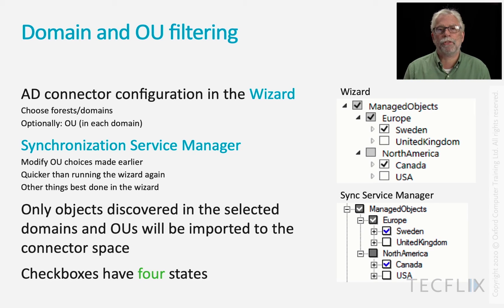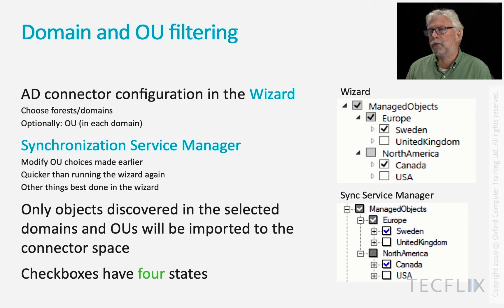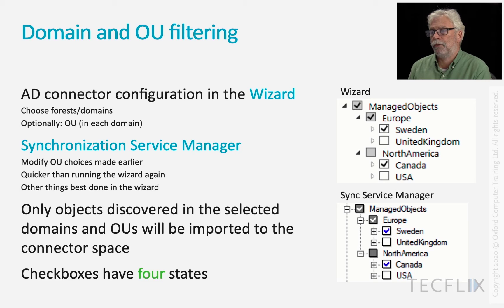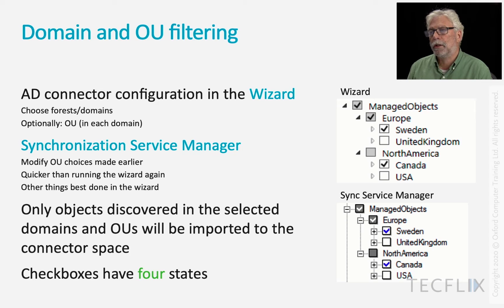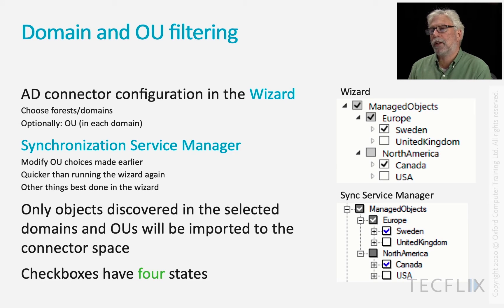One last thing to say is that these checkboxes do have four states, which is not entirely obvious at first. They can be checked and unchecked, but they can also be greyed and not greyed. By judiciously clicking checkboxes at different levels, you can get it to look the way it does. The important thing to grasp is that if a parent OU like Europe is greyed, adding an OU under it would not automatically be included. Whereas if you were to have a new one under Sweden, it would be automatically included — that's what the greying out is telling you. The greyed-out state means it's partial, and new OUs created under that won't be included.